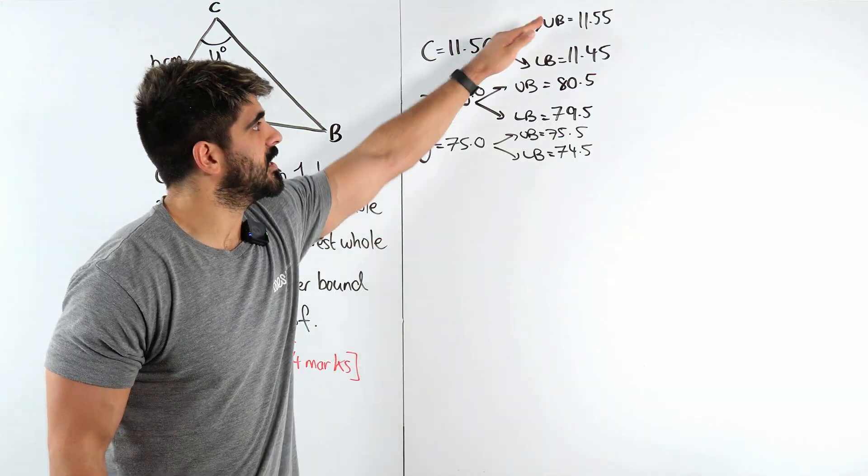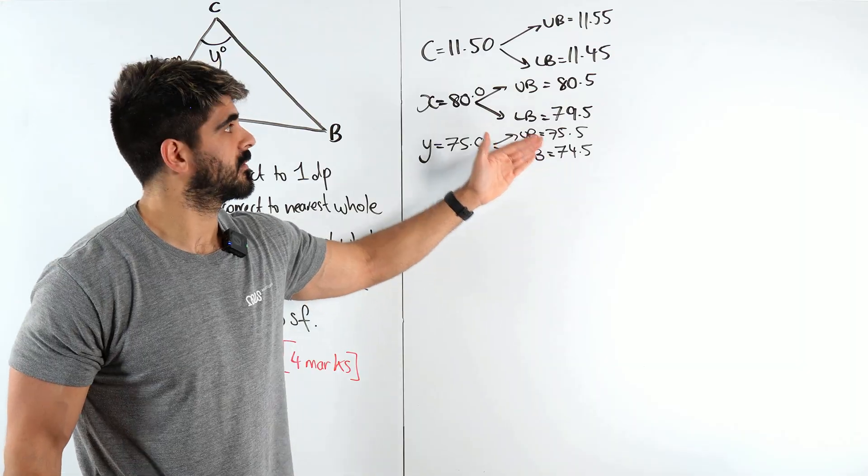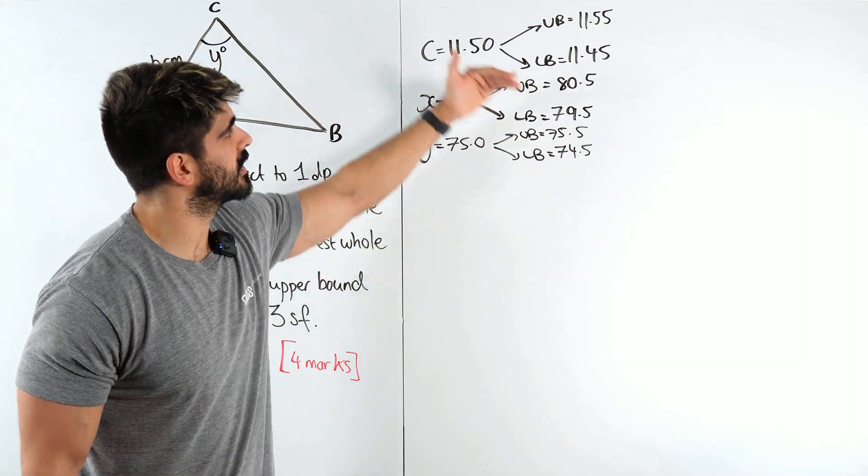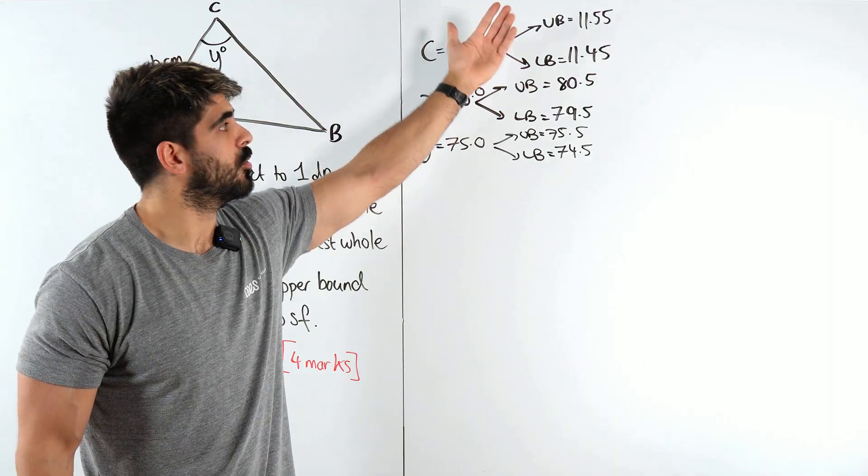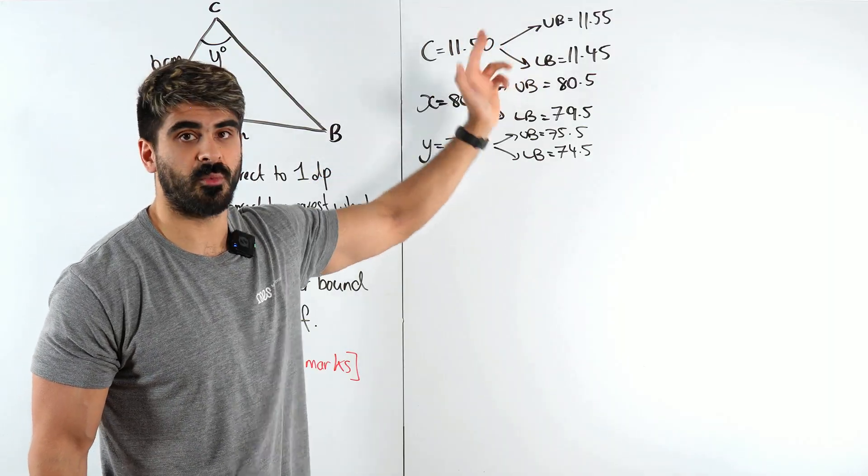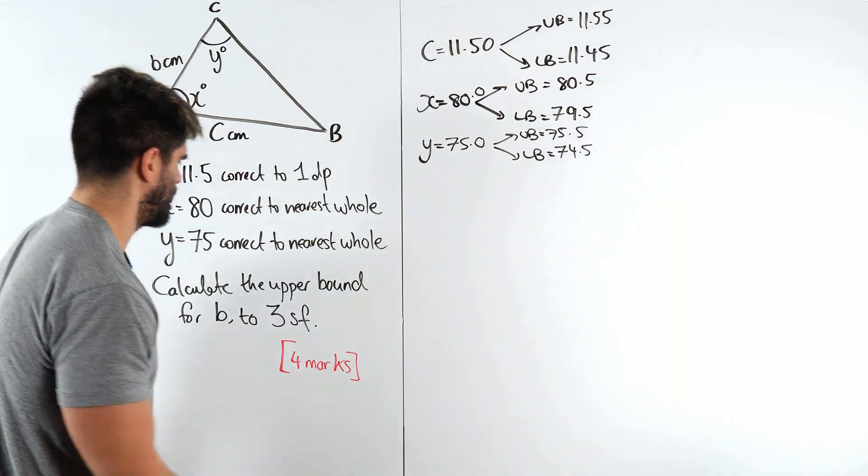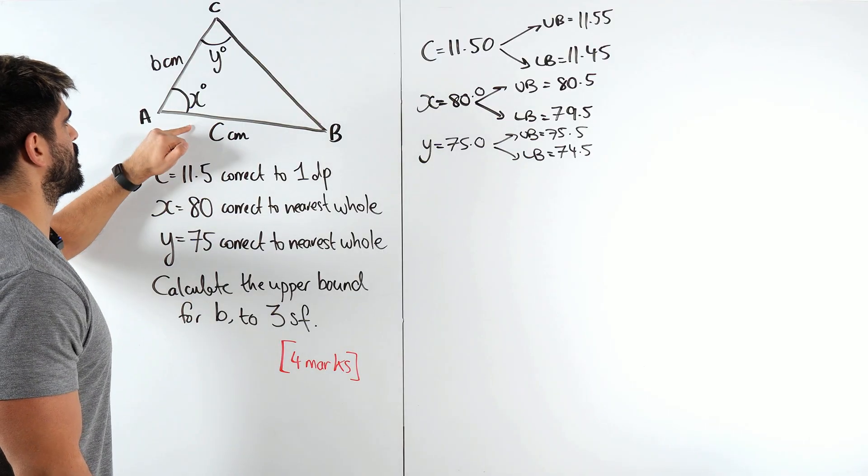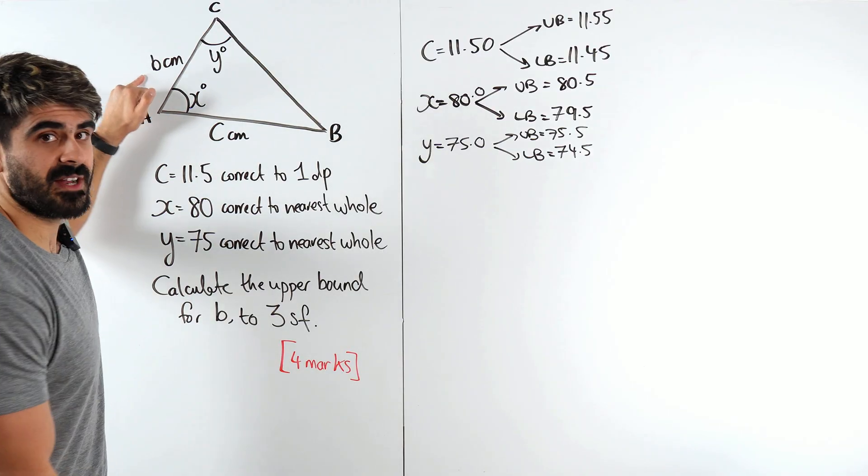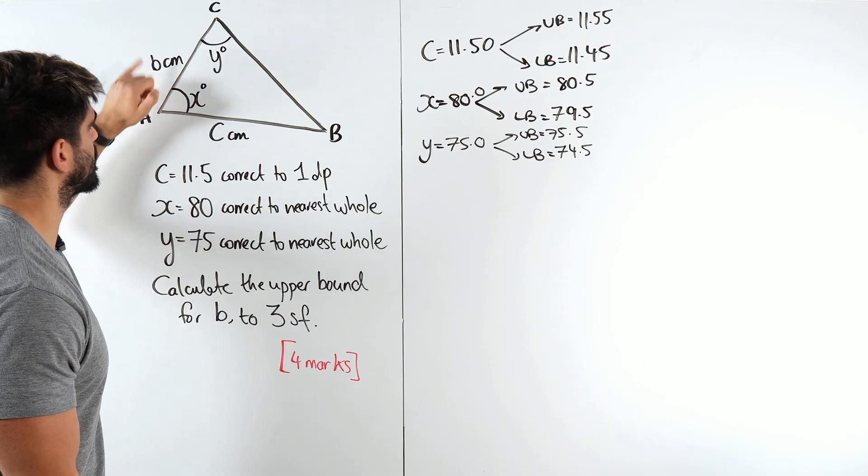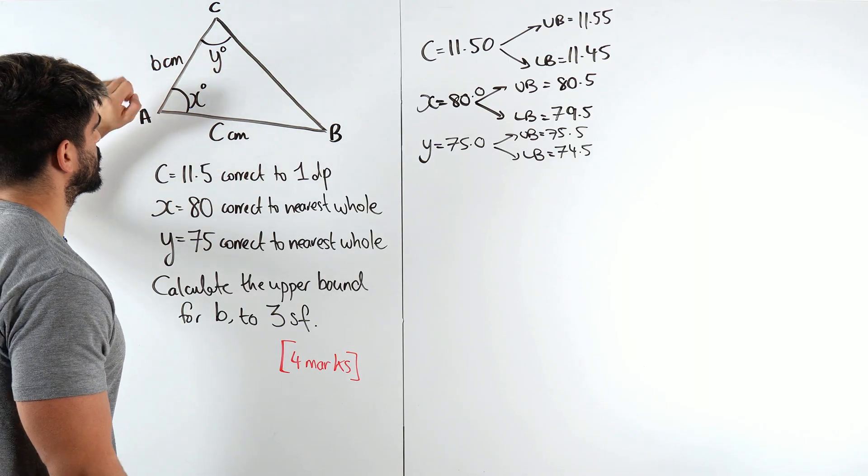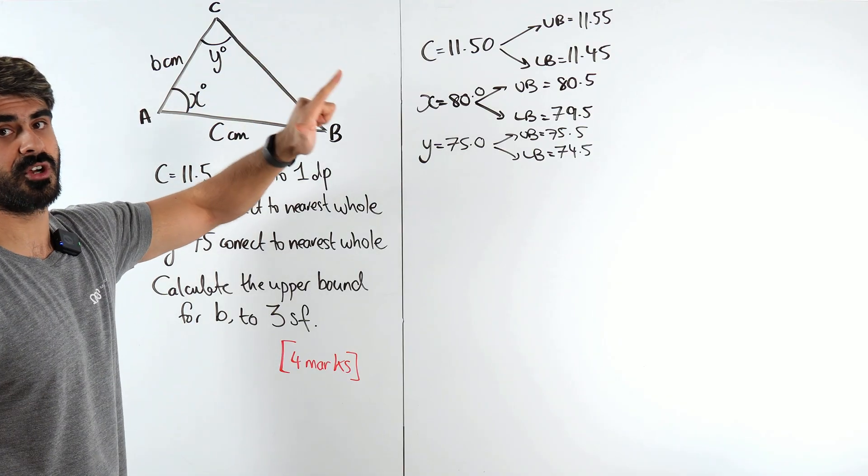You're not going to get credited for each individual one of these, but that's not the point. We're going to get some marks, maybe one mark for just showing one of these. But it's all about how do we use these now. We need to go back to here and think, how would I have worked out this value of b? Well, it's a non-right angle triangle, so I'm thinking about either the sine rule or the cosine rule.